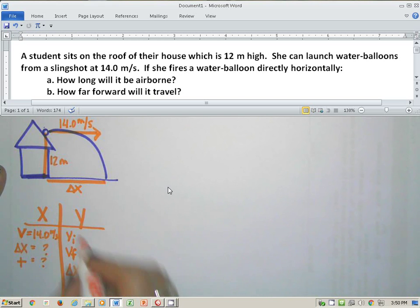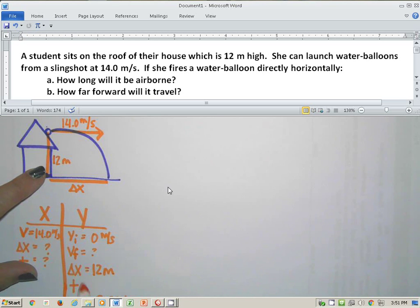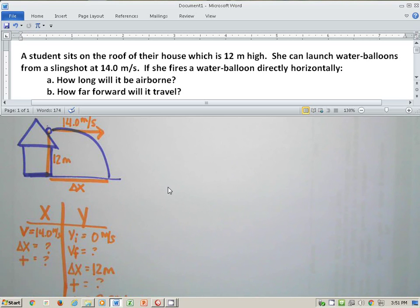On the Y axis, I know that VI is zero because she doesn't give it a downward force. She doesn't throw it down. So it starts out with zero speed. What it ends up having, I don't know. I do know a Y distance, which is the 12. And I don't know a Y time. One of the things about the projectile problems is that whatever time it takes on the X, it'll take the same time on the Y.